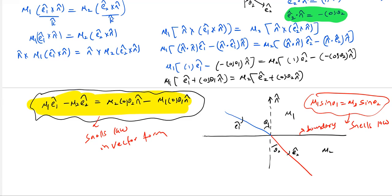This vector form will be applicable only when the interface boundary lies in space and the incident ray is defined by unit vectors in i cap, j cap form. For a plane diagram the scalar form is useful; for a three-dimensional approach this vector form will be useful. In the next video we'll take problems related to finding the unit vector representing the refracted ray given the unit vector of the incident ray. Thank you all for watching.